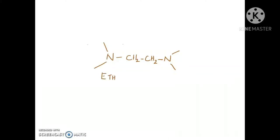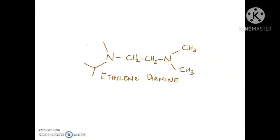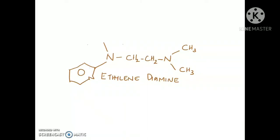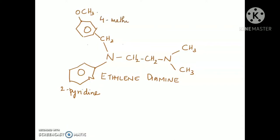The example given in your syllabus is Mepyramine. An N,N-dimethyl ethylenediamine backbone is present in Mepyramine. At the other nitrogen atom, a pyridine ring is attached at the second position, and a benzyl group (CH2-C6H5) with a methoxy group at the fourth (para) position is also attached. So you have a 4-methoxybenzyl group and a 2-pyridyl group attached at the nitrogen atom, with a common N,N-dimethyl group at the other nitrogen. That is the structure of Mepyramine.